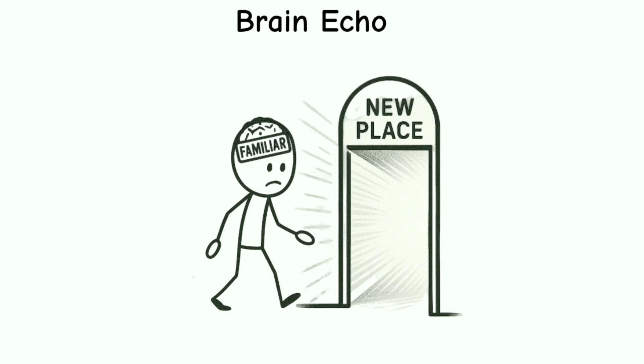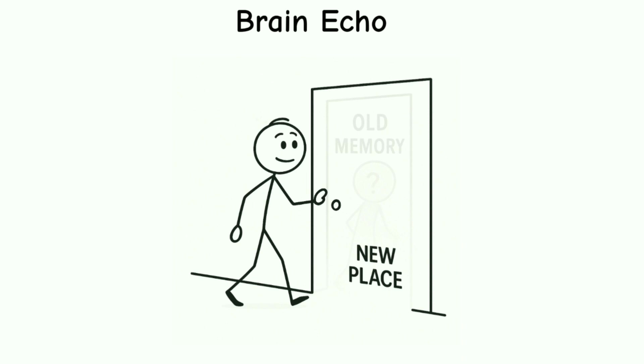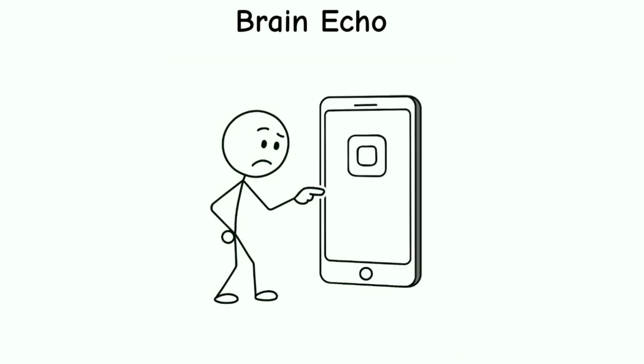Brain echo: you walk into a place for the first time and feel like you've been there before. This might be your brain glitching on input speed. It processes the experience and then flags it as familiar before you realize it's new, like opening a new app and your phone says already installed.